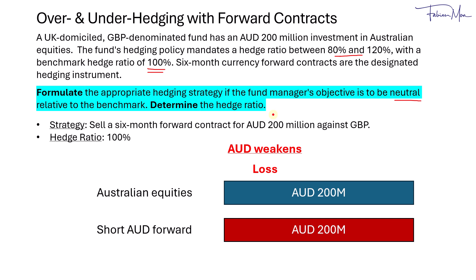On the other hand, when the Australian dollar weakens, for the short forward position there would be a gain, so you would have a hedge effect based on the forward contract — the gain offsets the loss. Now, if the Australian dollar were to strengthen, when we convert the equities from Australian dollar to British pounds there would be a currency gain. Unfortunately, on the forward position there would be a loss, because when you take short positions and the Australian dollar strengthens, there would be a mark-to-market loss. So the gain is offset by the loss, but at least that protects the value of the foreign investment.